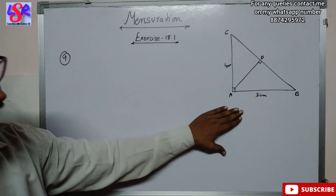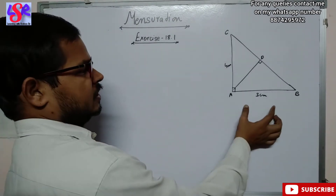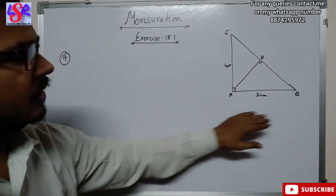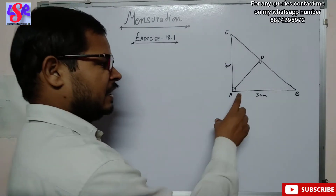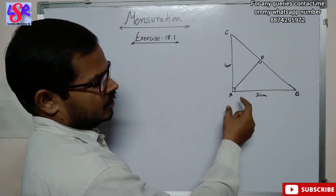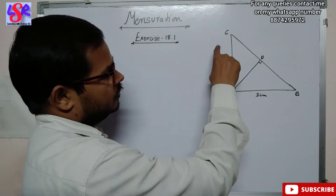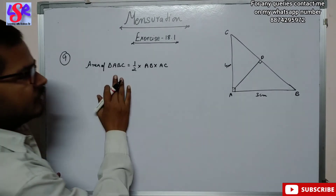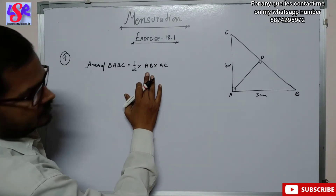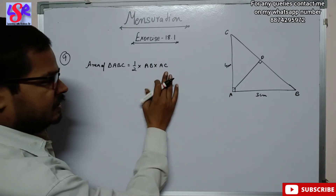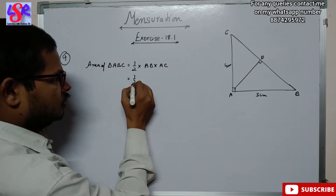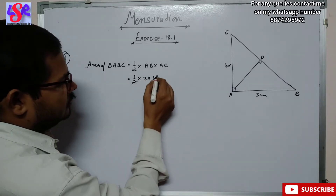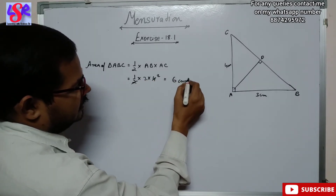In question number 9 we have this figure in which AB equals 3 centimeter, AC equals 4 centimeter, and we have to find the area of triangle ABC in which angle A is 90 degrees. We can use the formula half base into height. So the area of triangle equals 1/2 into base AB into height AC, which is 1/2 into 3 into 4, equals 6 centimeter square.